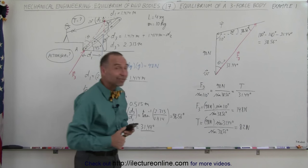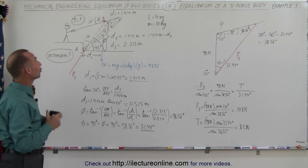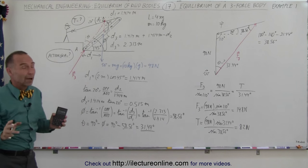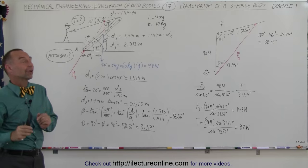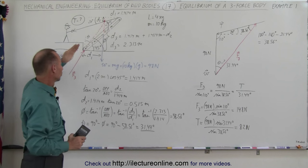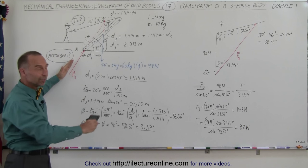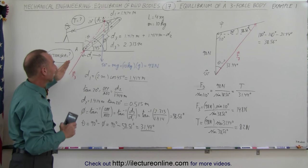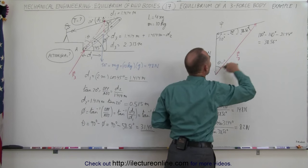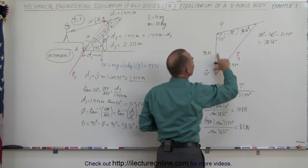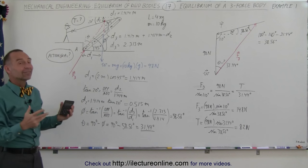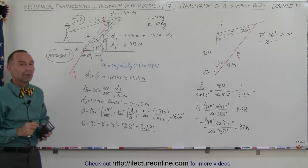And that's how we use the principles of a three-force body to solve for the two unknowns — the tension and the force acting on A. Without using this system, this would be a very difficult problem. But knowing that the lines of action all pass through the same point helps us find the direction of F3, and knowing that the triangle made by the three forces must be complete allows us to find the magnitude of the other two forces using the law of sines.